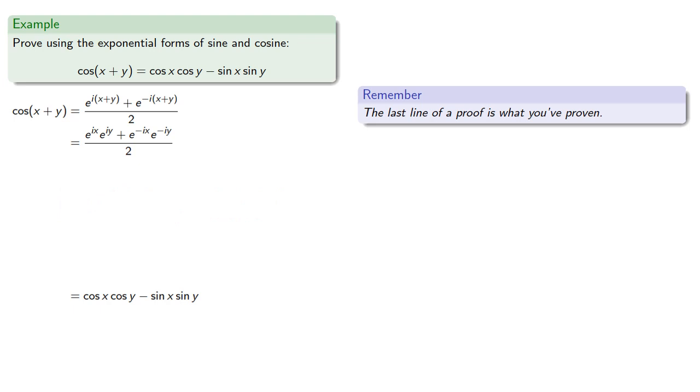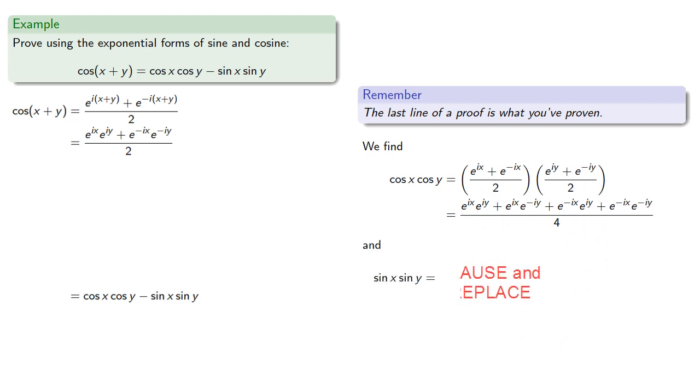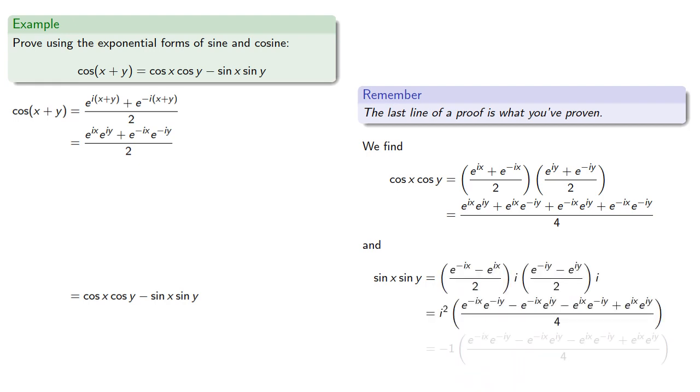And again we have the exponential forms for sine and cosine. So we can find cosine x cosine y... And sine x sine y. And equals means replaceable no matter which direction you're going. So we can put those as the preceding line.